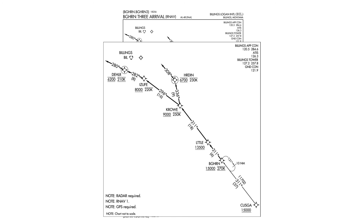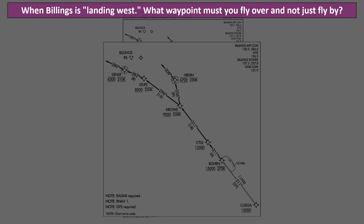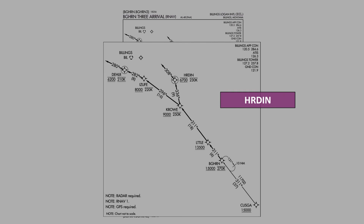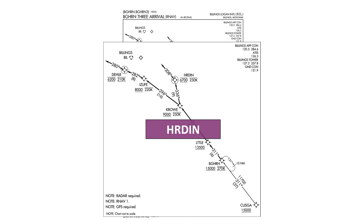Last question: when Billings is landing west, what waypoint must you fly over and not just fly by? Bighorn, Harden, Crow, or all of the above? Just like on an approach plate, a flyover waypoint will have a circle around it. There are two on this plate: one at Harden, which is part of the west operation, and one at Deller, which we would overfly when landing east. All other waypoints on this arrival are just fly-by waypoints.